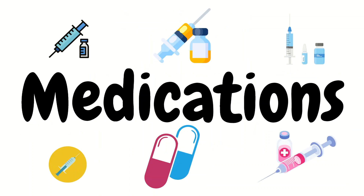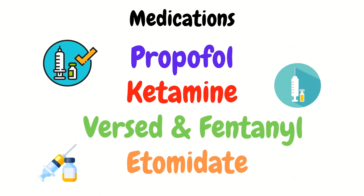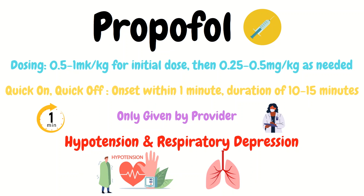Now let's get into the common medications used: propofol, ketamine, Versed, fentanyl, and etomidate. Starting with propofol — the typical dosing is 0.5 to 1 milligram per kilogram as the initial dose, then redosing with 0.25 to 0.5 milligrams per kilogram as needed. Some providers give the initial dose in half, let it take effect, then give more little by little as needed. The most important thing to remember is that being too safe is never bad with these strong medications, because once you give them, you can't take them back.